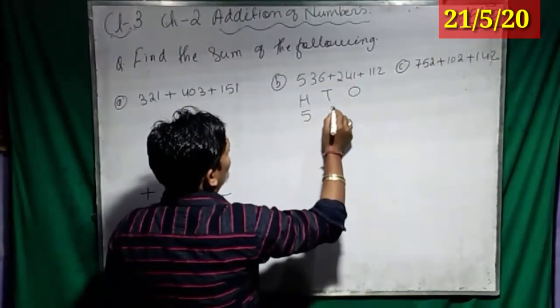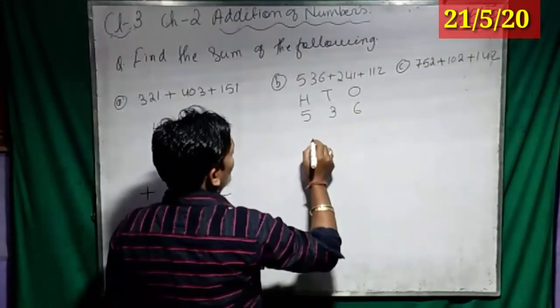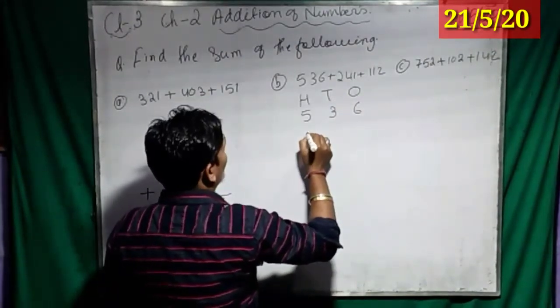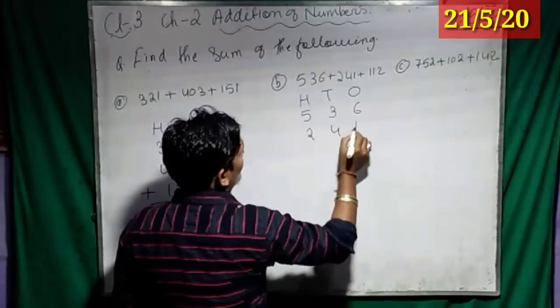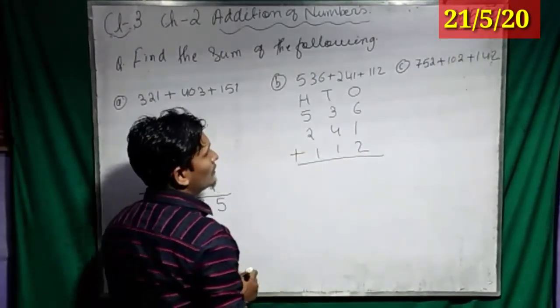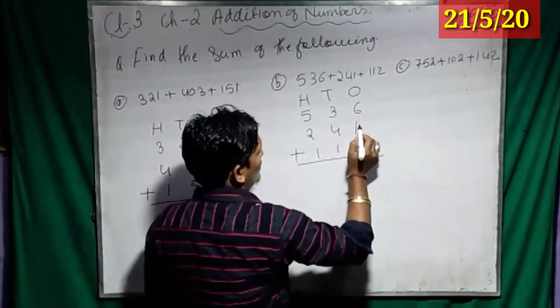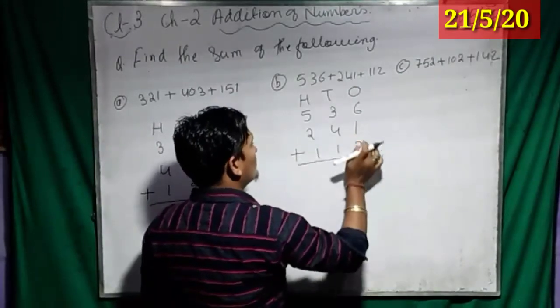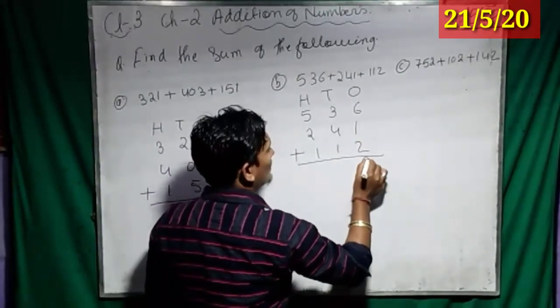Then, 536, then 241, then 112. Now, plus. So, 6 plus 1 is how much? 7. 7 plus 2 is how much? Yes, 9.